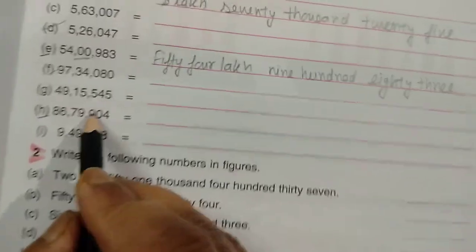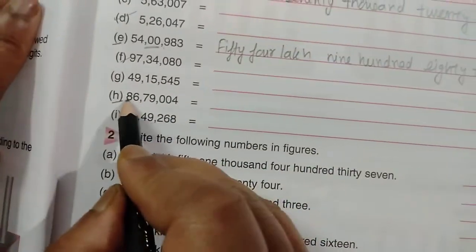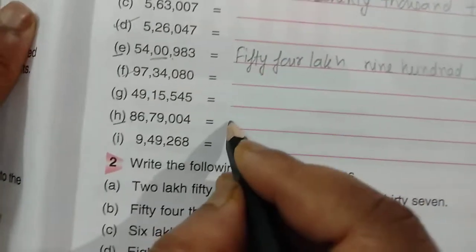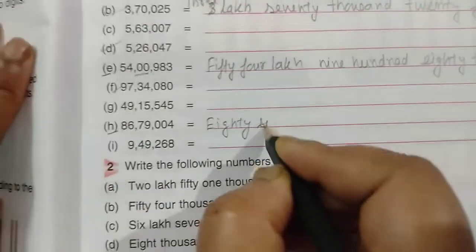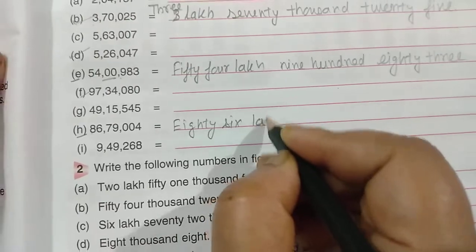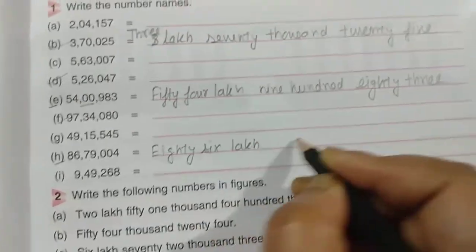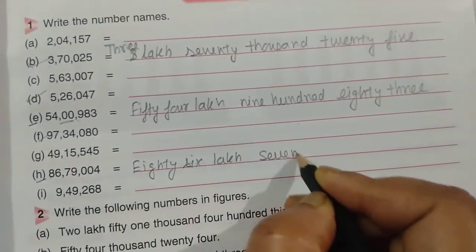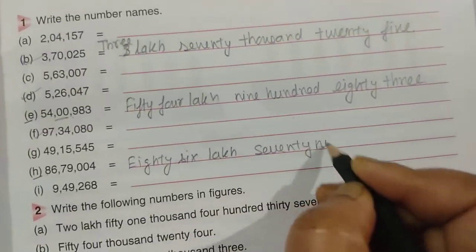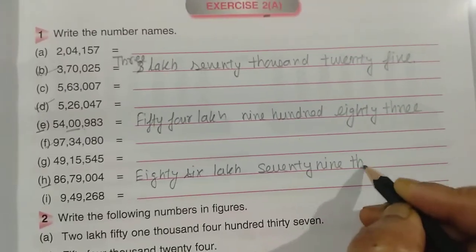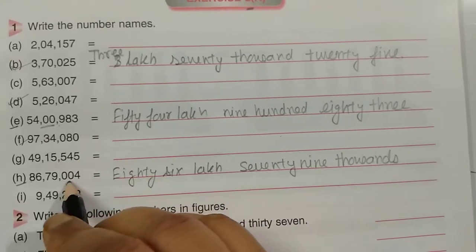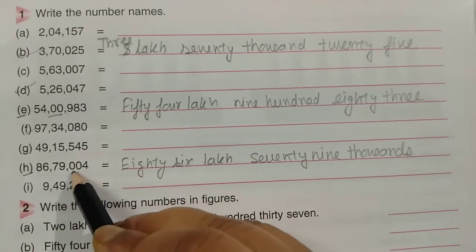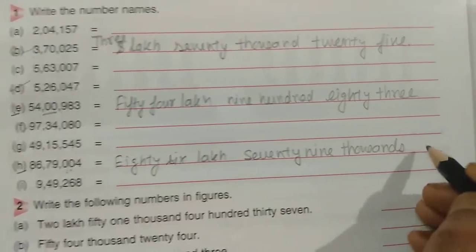Let's do question H. Ones, tens, hundreds, thousands, ten thousands, lakh, ten lakh — so the number is eighty-six lakh, seventy-nine thousand. Is there anything in the hundreds and tens place? Nothing. So just write four — the answer is eighty-six lakh, seventy-nine thousand, four.